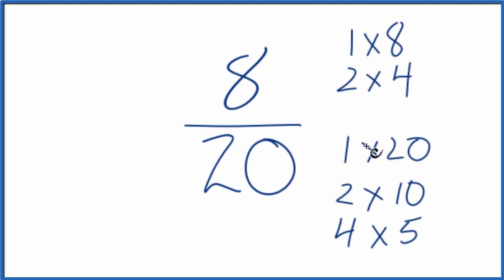So these are the factors for 8 and 20. We're looking for a common factor, the greatest common factor here. And it looks like 4 is going to be the greatest common factor.